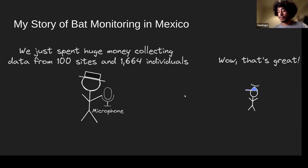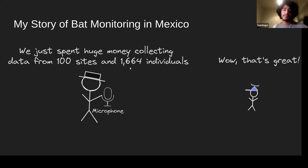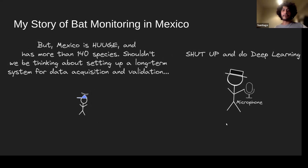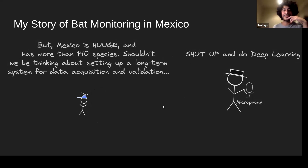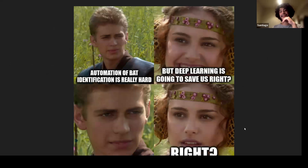Fortunately, there had been a big push toward that goal. In conjunction with many bat researchers across Mexico, CONABIO organized a massive project where they went out and collected reference recordings of bat echolocation calls throughout Mexico — capturing bats with mist nets, releasing and recording them from 100 sites and over 1,500 individuals. That's great, however Mexico is huge, there are more than 140 bat species, and there are very different environments, so I started thinking: is this really enough data?